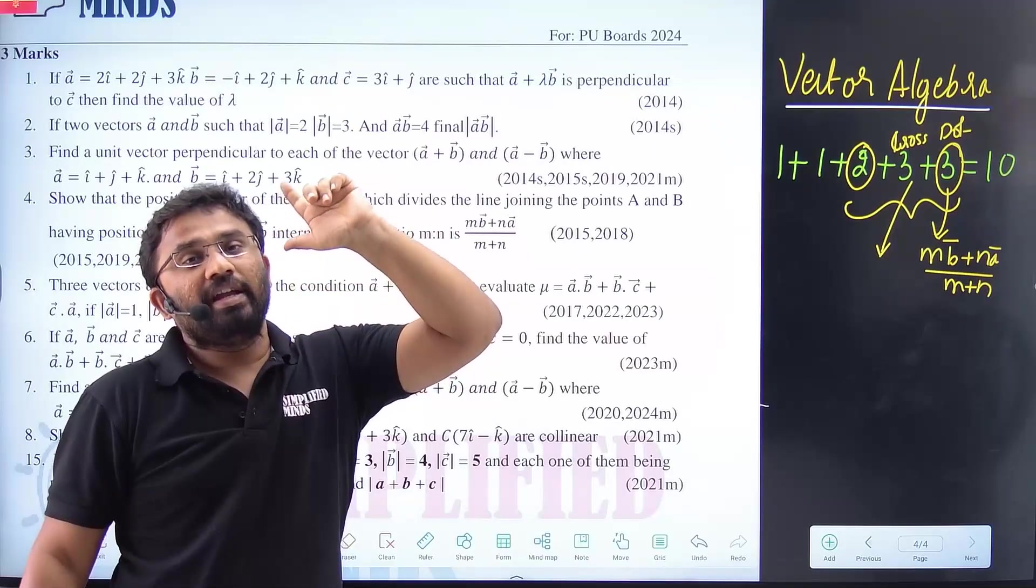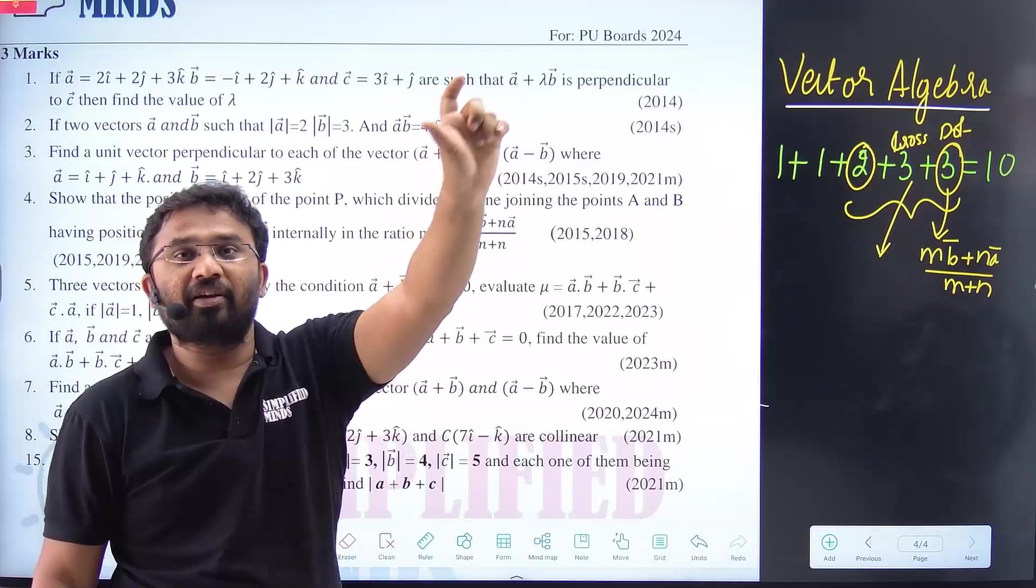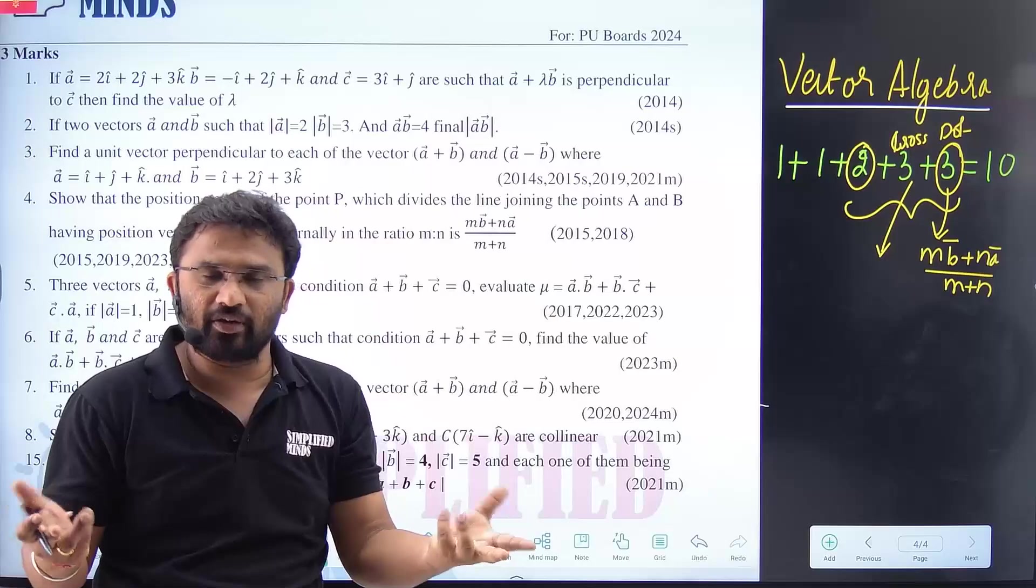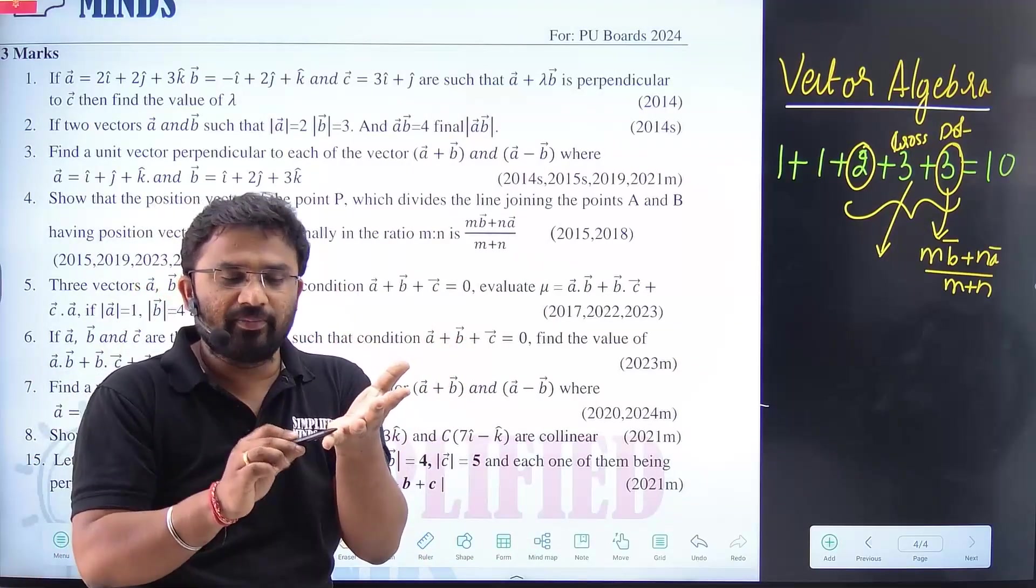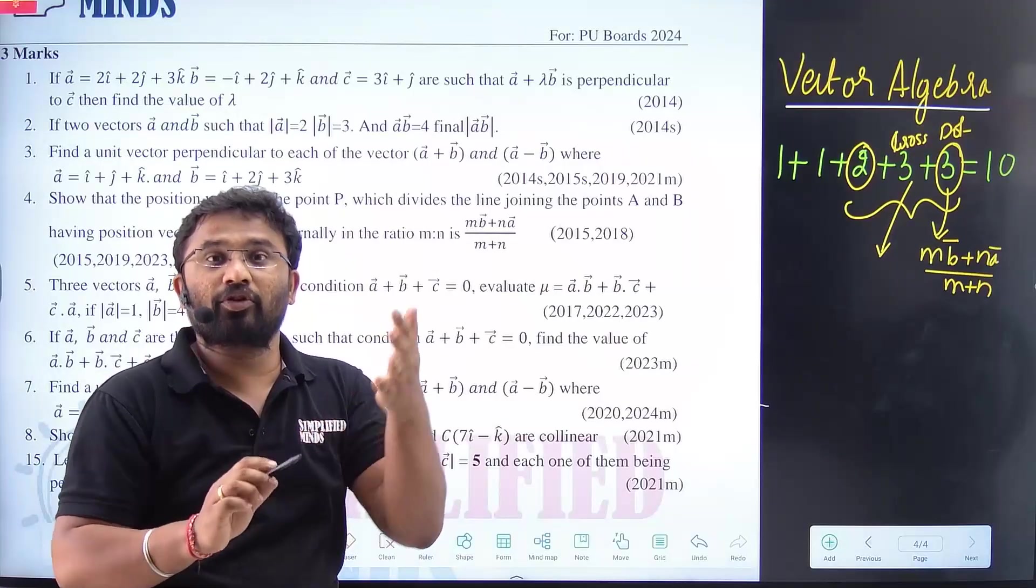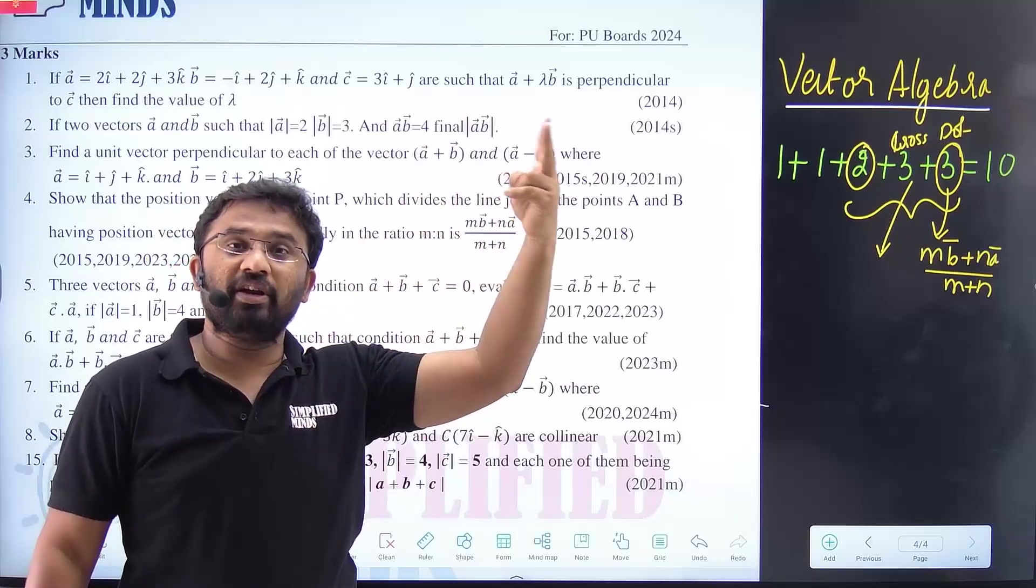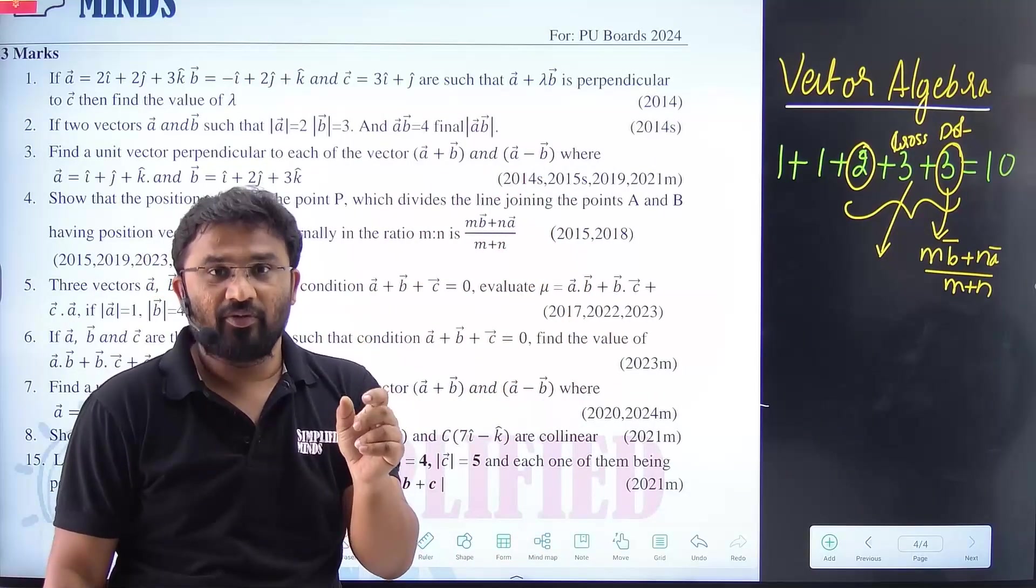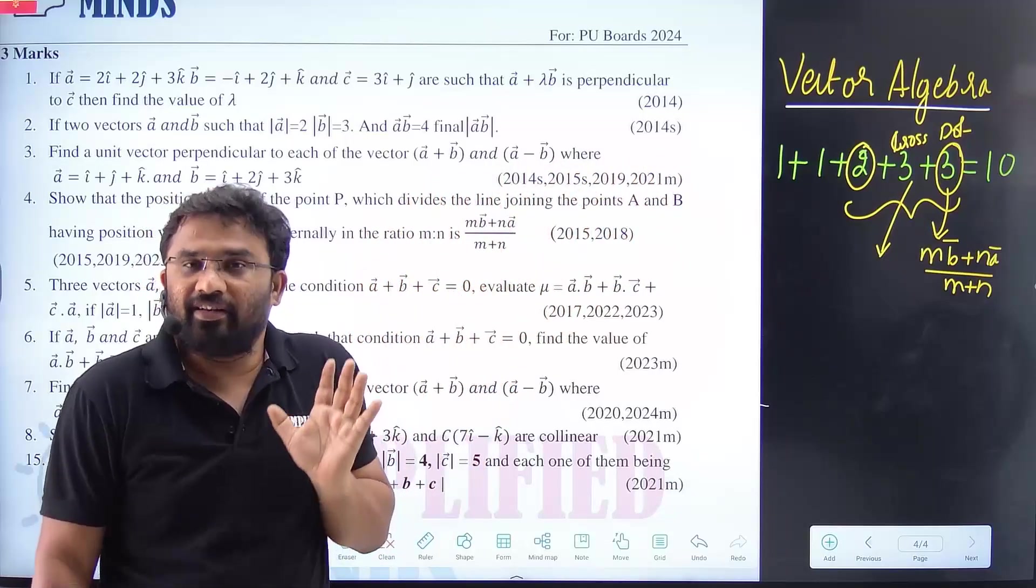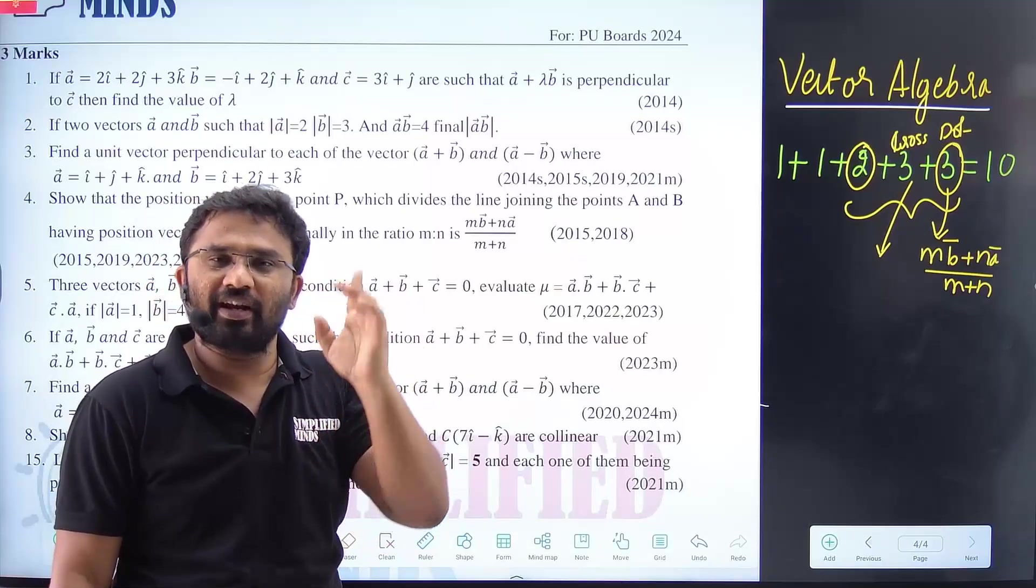Dot product and cross product. Derivation is very important. mb vector plus na vector divided by m plus. Very easy. I'll teach you. You'll never forget. Don't worry. That means vector product, area of parallelogram, area of triangle. And find a vector perpendicular to two given vectors. And a, b, a plus b, a minus b. So that means find a vector, vector product. That is very important. I'll teach each other.